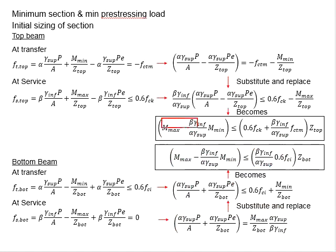Now you have two equations here. One is for Z_top and another one is for Z_bottom. The other parameters here are all known. Based on the given loading, you are able to determine the moment maximum and moment minimum. Based on the assumed losses, you are able to determine alpha and beta.